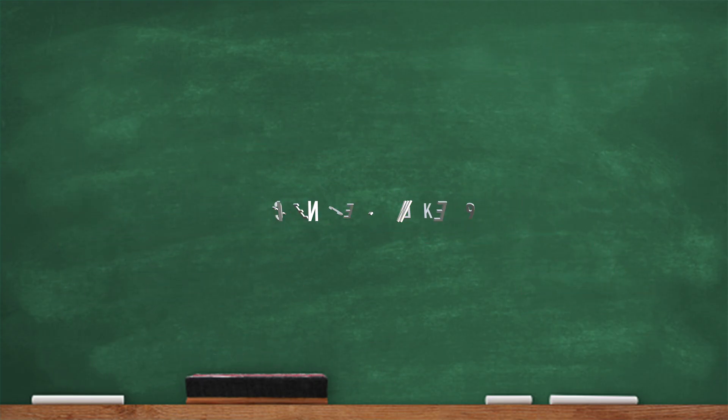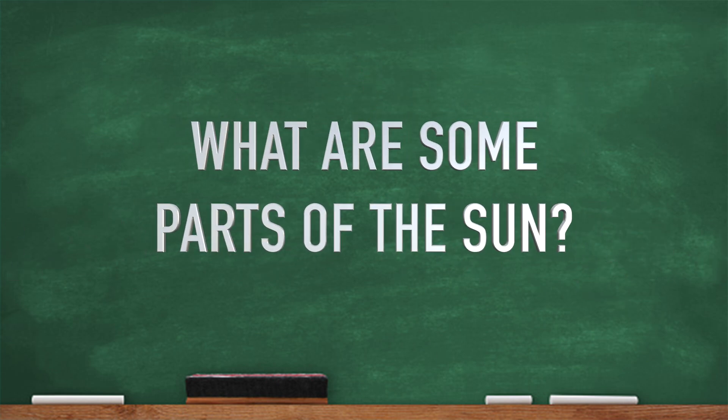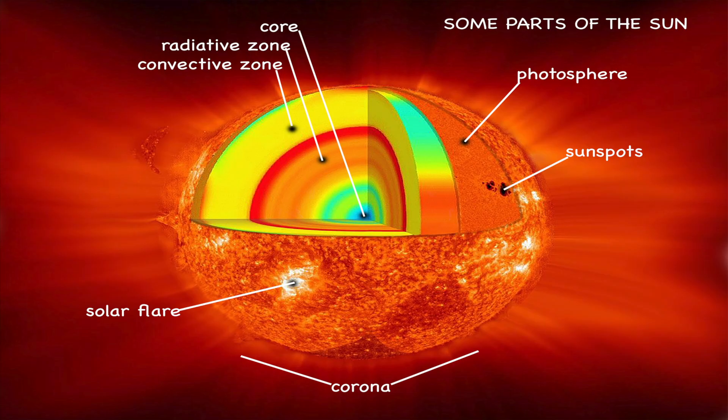What are some parts of the sun? You mean besides the big orange thing in the sky? Yeah, there's parts to it. See ya!